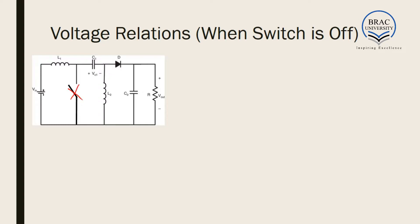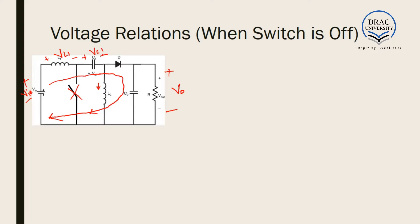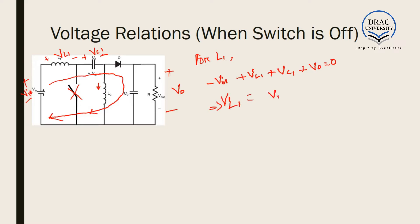When the switch is off for inductor L1, no current flows in the previous direction; the current follows this loop instead. We will learn later why no current can pass in that direction. Applying KVL, we find minus VIN plus VL1 plus VC1 plus VOUT equals 0, giving VL1 equal to VIN minus VC1 minus VOUT. We put this as equation number 2.